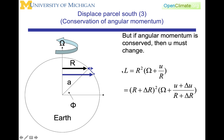The angular momentum per unit mass is going to be r squared times (big omega plus u over r). If we're moving to this new place, then l here is going to be (r plus delta r) squared times (large omega plus (u plus delta u) over (r plus delta r)). This is the relative angular momentum per unit mass at the new location. If it's conserved, then the angular momentum at these two locations is equal.